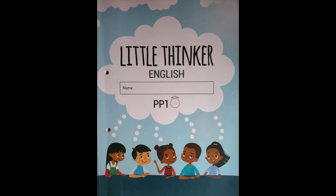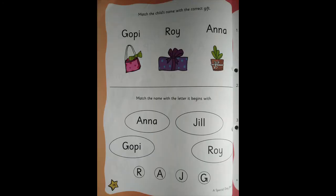Children, open your Little Thinker English and go to page number 38. I'm going to read the instructions: match the child's name with the correct gift. Children have given gifts, so what did Gopi give, what did Roy give, what did Anna give? They all gave to Jill. So who gave what gift — you are supposed to match.